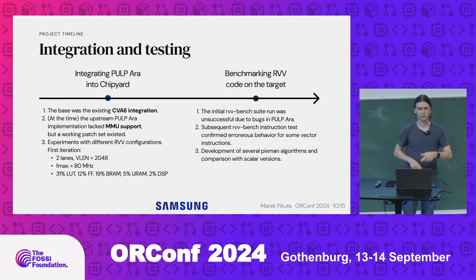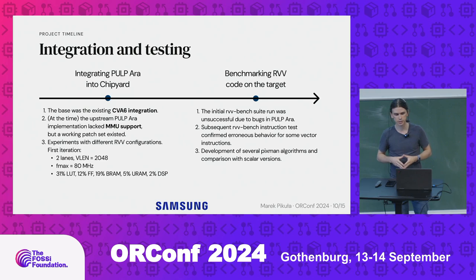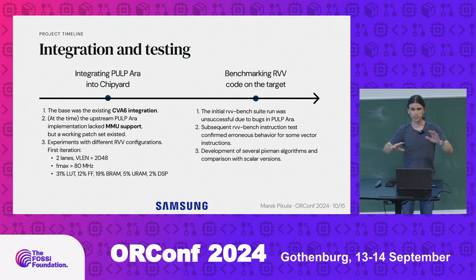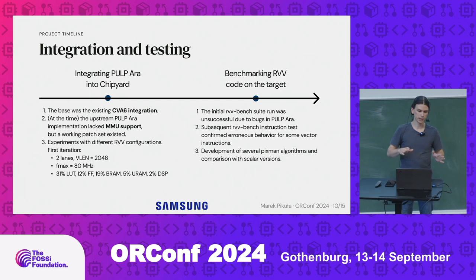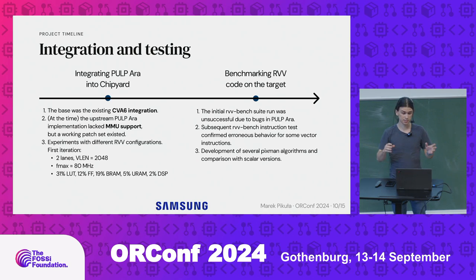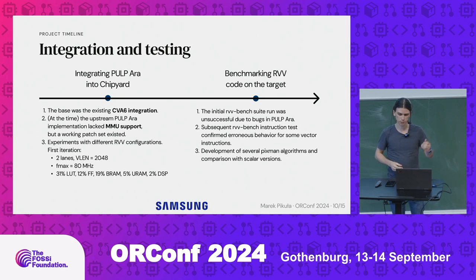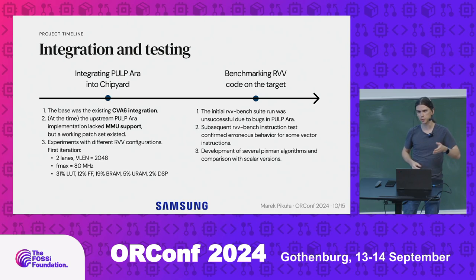Then came the interesting part: integration, testing, and debugging. I integrated PULP ARA into ChipYard based on the existing CVA6 integration. At the time, ARA didn't have official MMU support — there were some patch sets I tried to glue together, and in the end it somewhat worked. I settled for the default configuration of ARA: two lanes and VLEN of 2048. I managed to get an Fmax of 80 MHz on the core itself; running in FireSim it's a little lower.